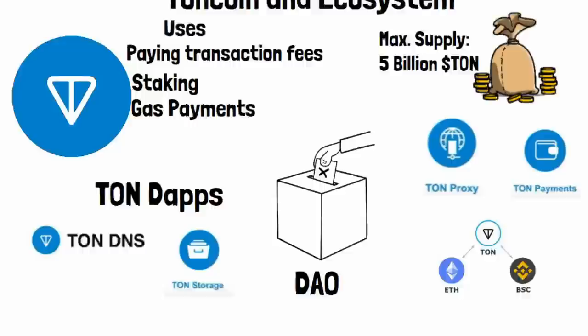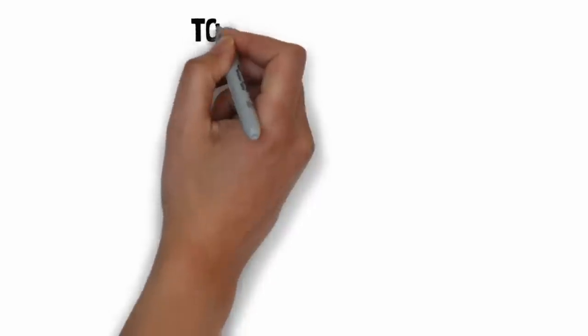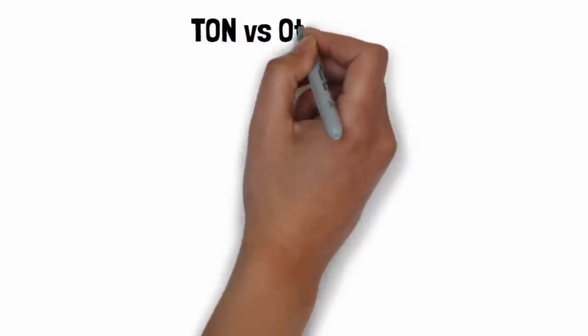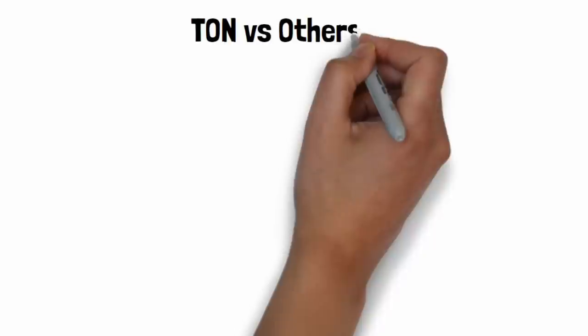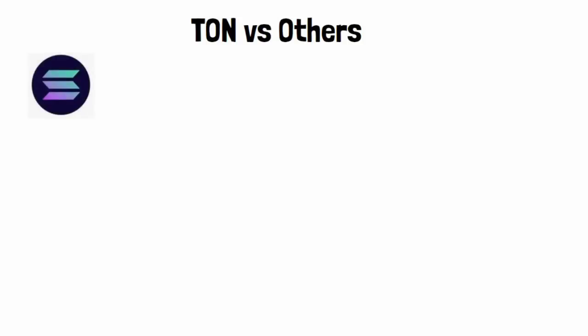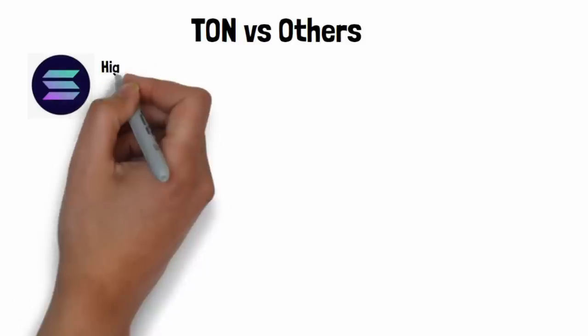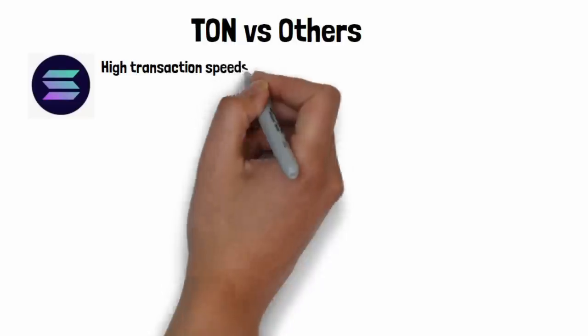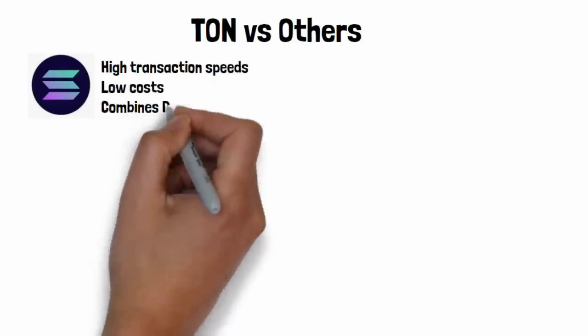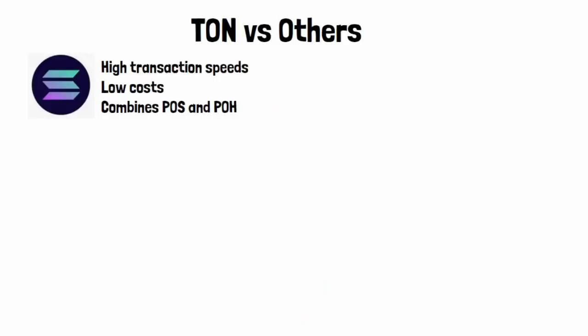Now it's worth noting how TON compares with other prominent blockchain solutions. Each of these blockchains shares similar goals with TON in terms of speed, scalability, and ease of use, but they differ in execution and focus. Let's start with Solana — much like TON, Solana emphasizes high transaction speeds and low costs, processing thousands of transactions per second using a combination of proof of stake and proof of history. Another competitor is Avalanche, which also uses sharding to handle high transaction throughput.